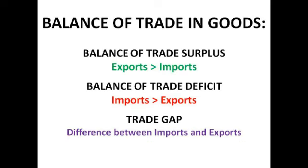You may have heard the words surplus and deficit — a surplus is when you have an inflow of money, so the exports from the UK are greater than the imports, meaning money comes into the UK. A deficit is when the opposite is true — we're importing more than we're exporting. The trade gap is the difference between the imports and the exports. So if we imported a million worth of goods and exported two million, we'd have a trade gap of a million and a balance of trade surplus of a million.